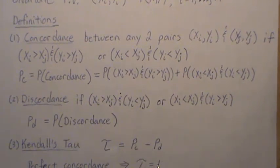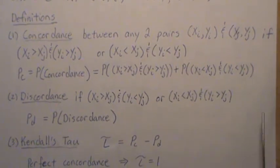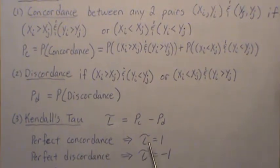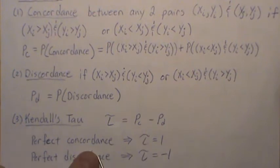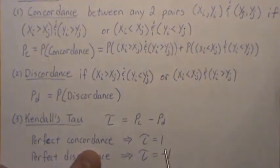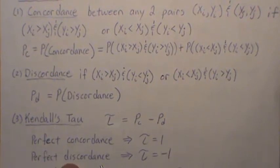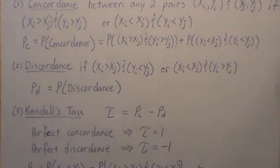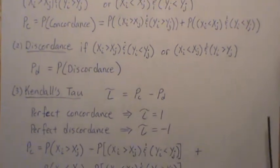We define Kendall's tau as: tau = P(concordance) − P(discordance). It's a sensible formula because if there's perfect concordance, P(concordance) = 1 and P(discordance) = 0, so tau = 1 — just like Pearson's or Spearman's correlation. If there's perfect discordance, tau = −1. So tau varies between −1 and 1, just like Pearson's and Spearman's correlations.